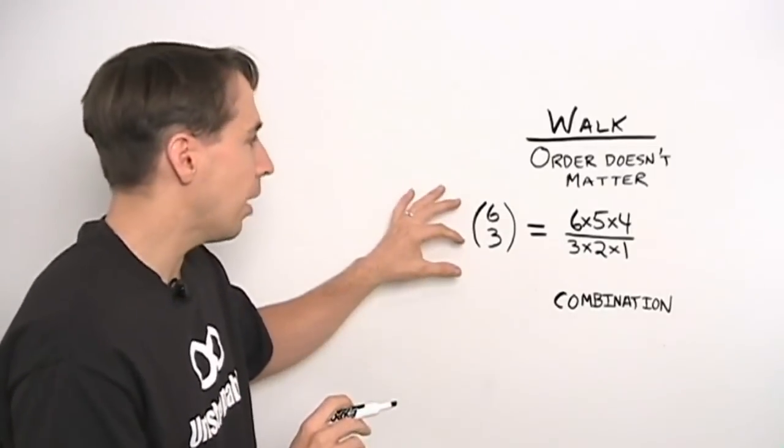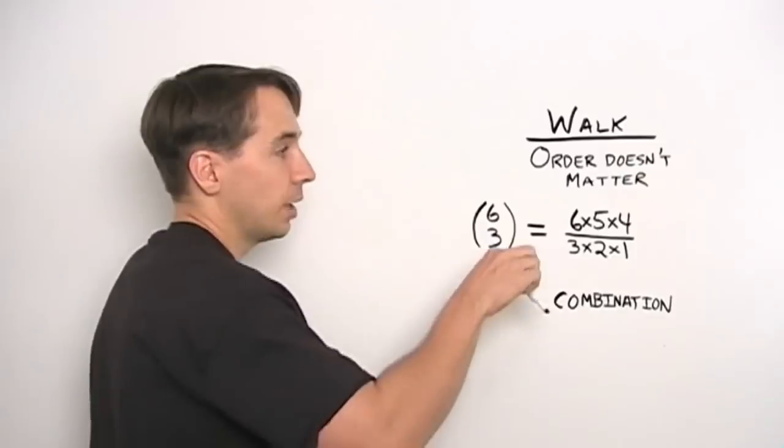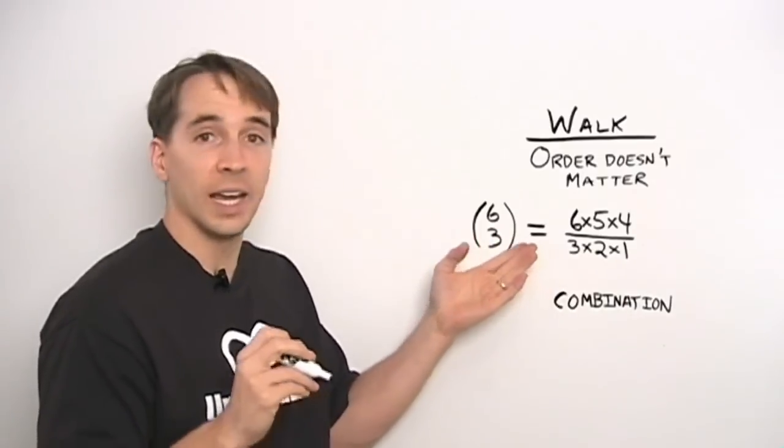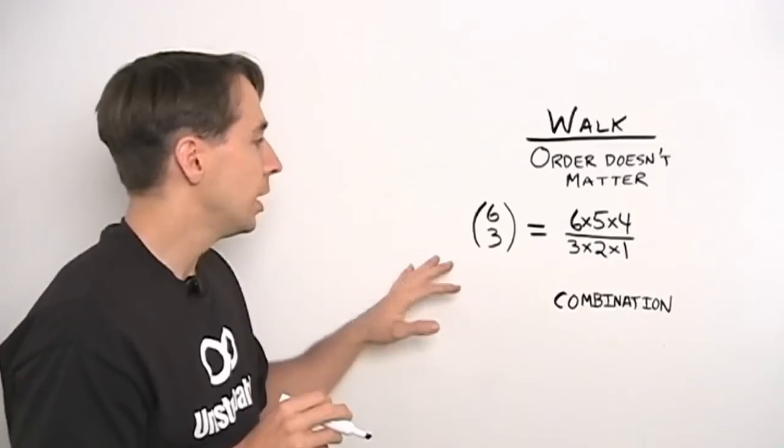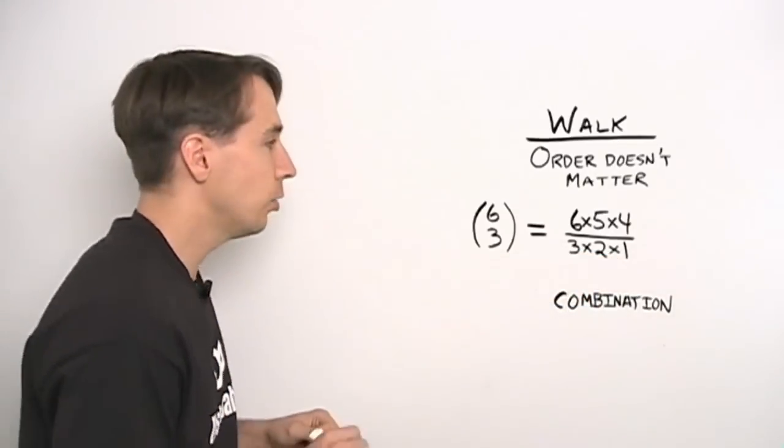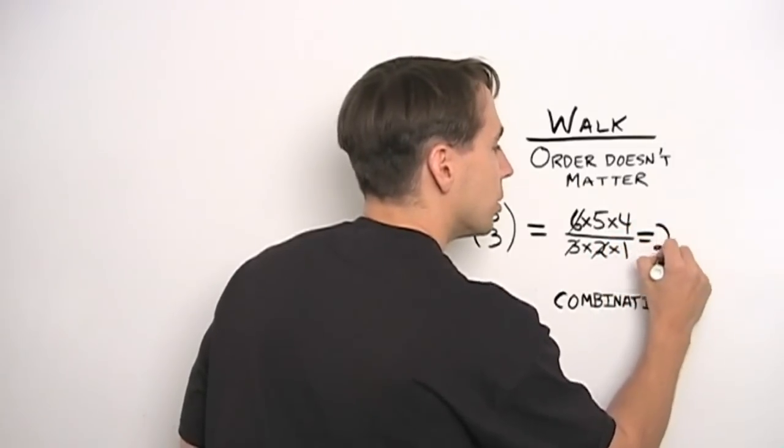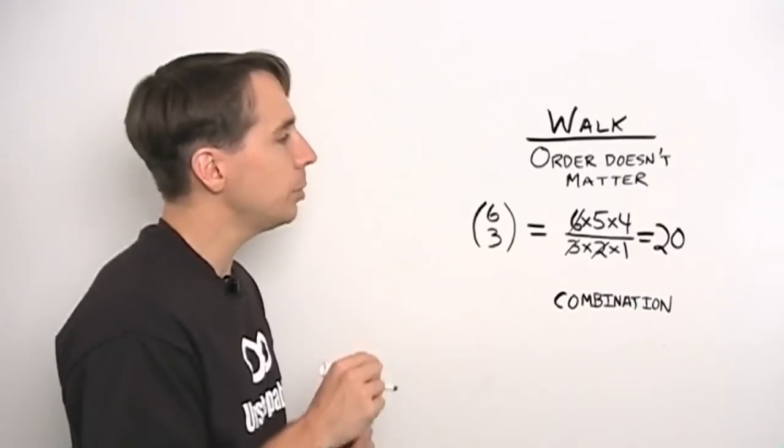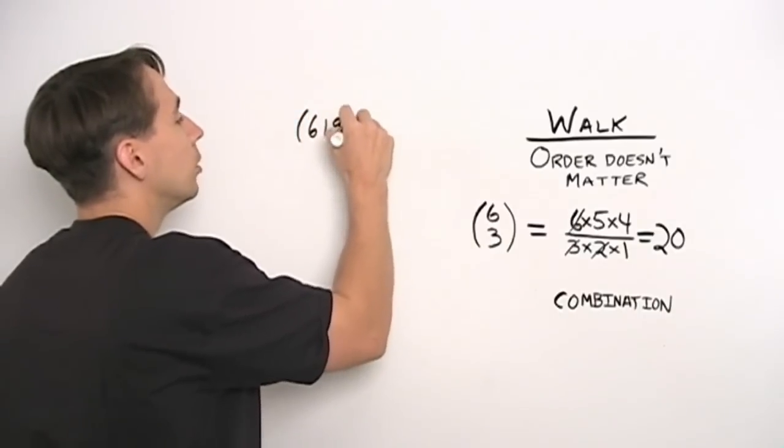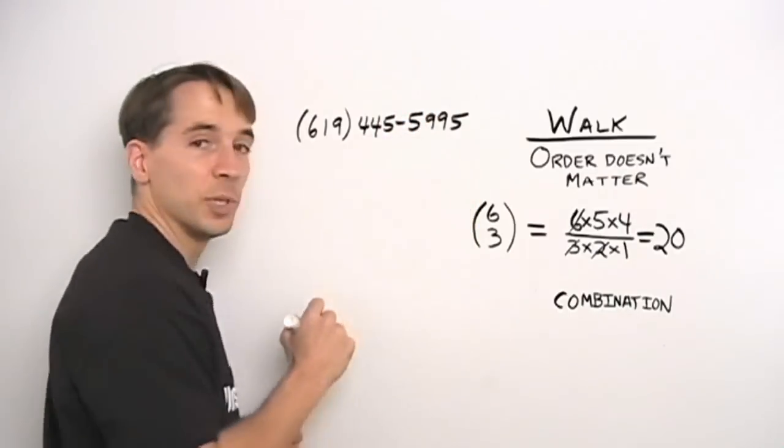And we've already seen how to compute this. We've seen how to count the number of ways to choose three objects out of six, where order doesn't matter. Well, first we pretend that order does matter. The first one can be chosen in six ways, the next one in five, the next one in four. Then we think, wait a second, this is over-counting, because we're counting every possible group multiple times. In fact, each group of three is counted three times two times one times, so we have to divide by that so that we count each group once and only once. And now we can compute this. The three and the two, that gives you six, cancels with the six in the numerator, and that gives us twenty ways to choose the three people to go get the pizza that you're going to buy us. And that number again, just so you don't forget, is 619-445-5995, Vinny's Pizza. Thank you very much.